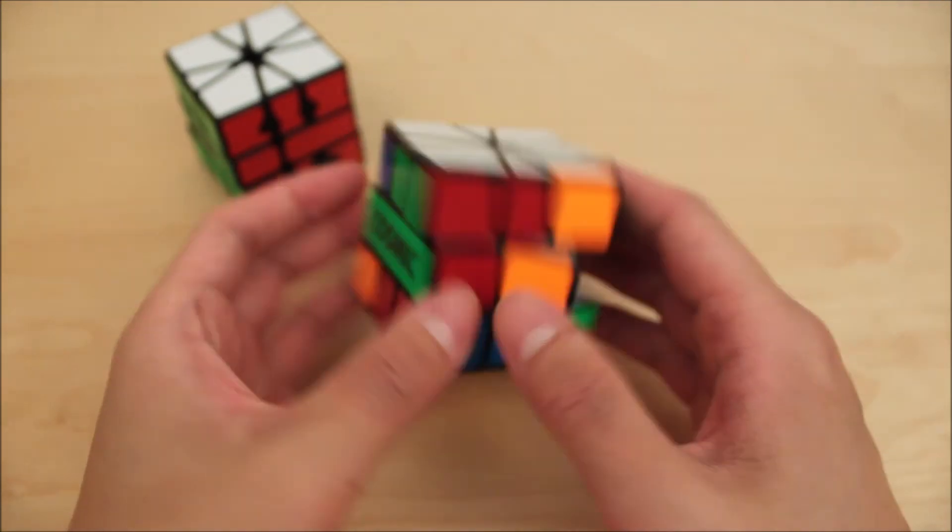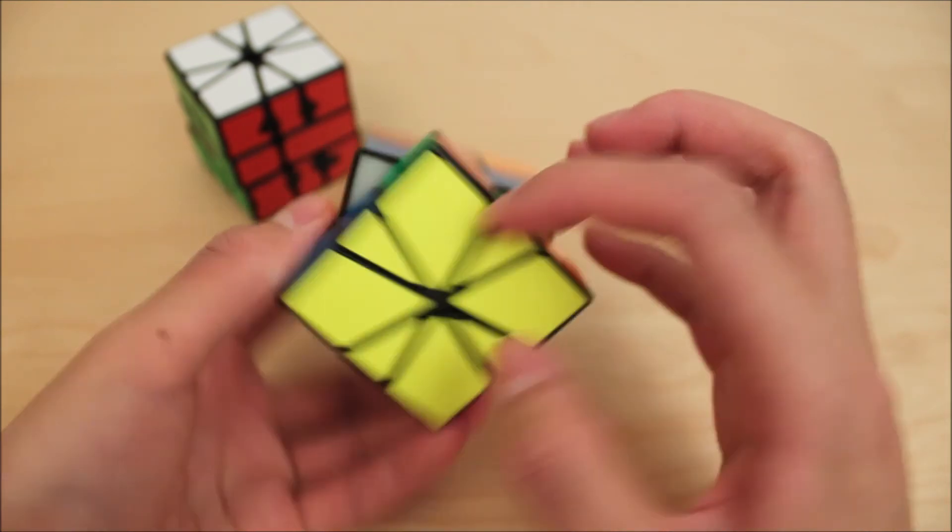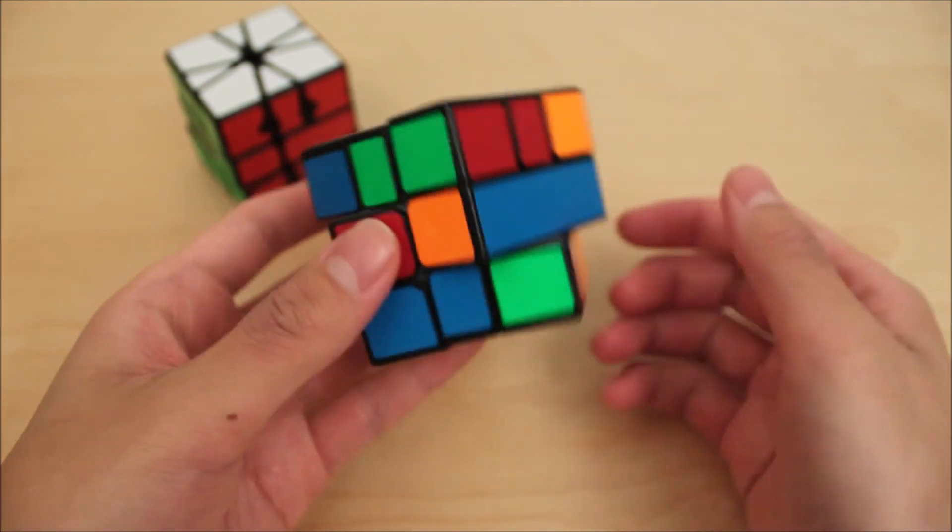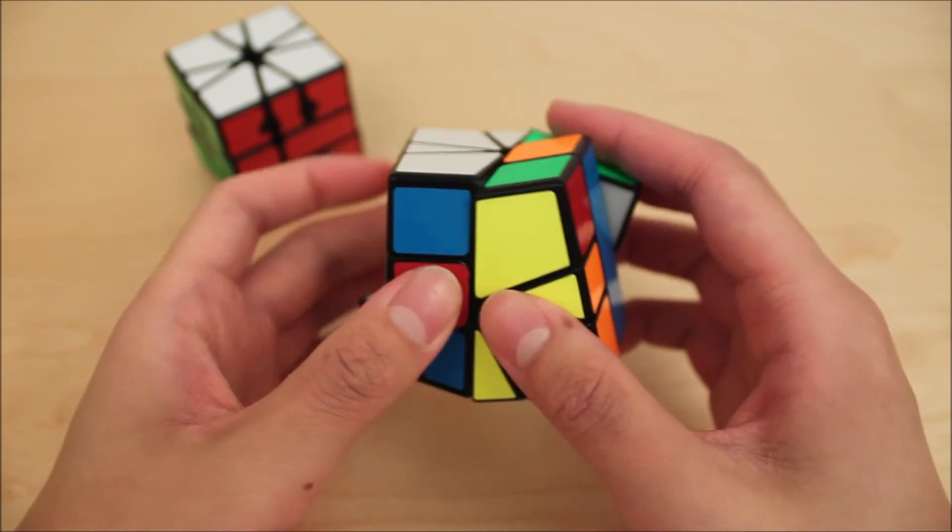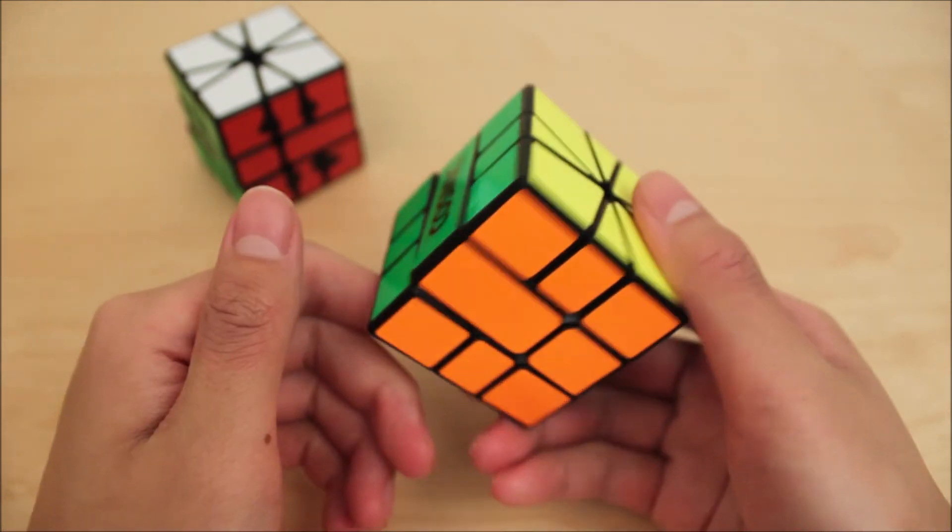And then, same application with the V-perms, so adjacent here, adjacent here. And then we can just do this, PJPJ, and we're done.